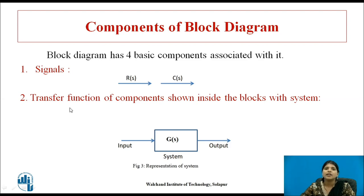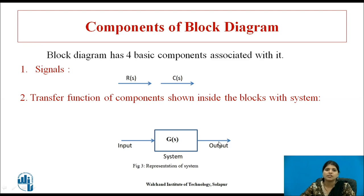The second component is the transfer function of components shown inside the block. Here G(S) is the transfer function of the system. The input is R(S) and the output is C(S). This is the representation of the system.